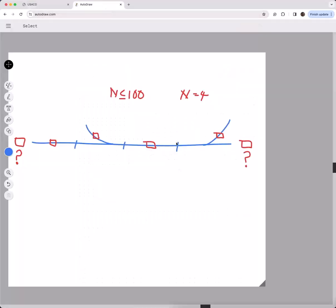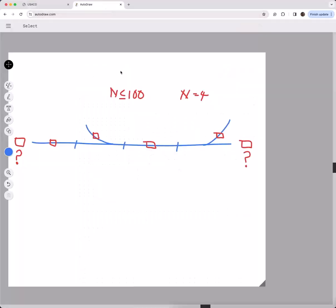Let's visualize the problem. N represents the number of miles of highway and N can be at most a hundred. In this example we have N equals four, so I have it divided into four segments. For each segment or each mile, Farmer John has a sensor that produces a maximum and a minimum amount of traffic flow at that particular segment.